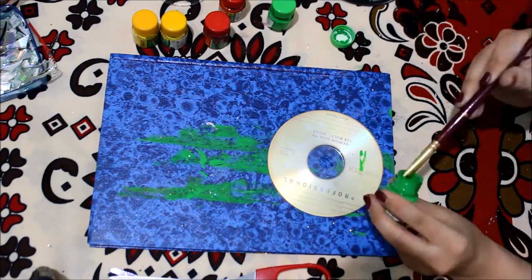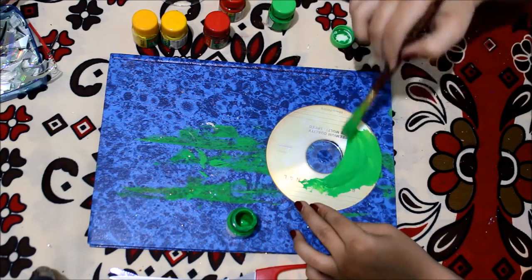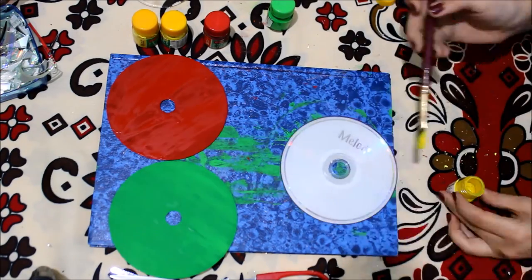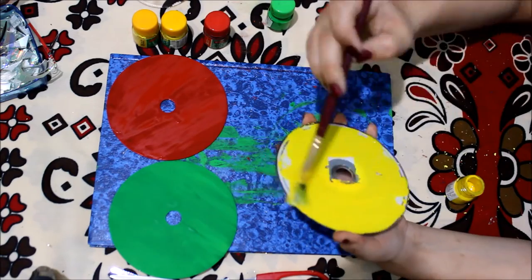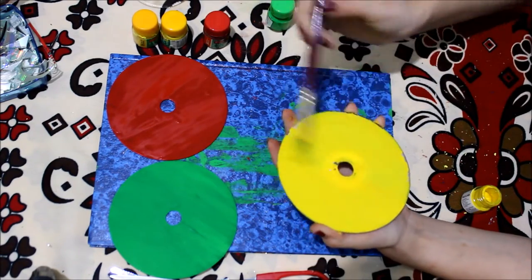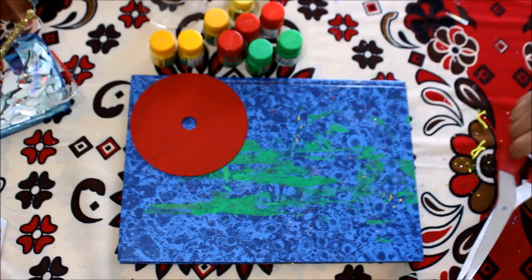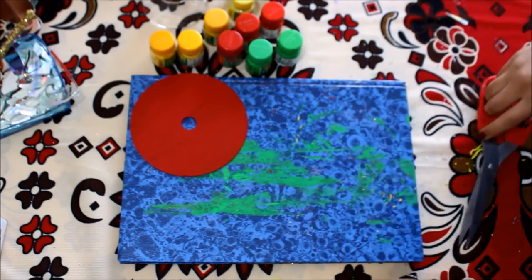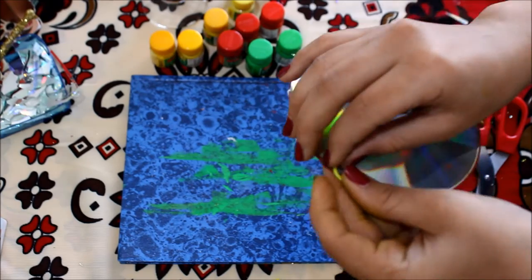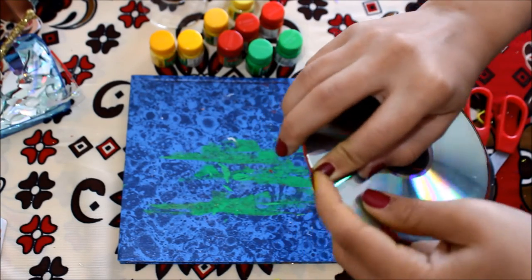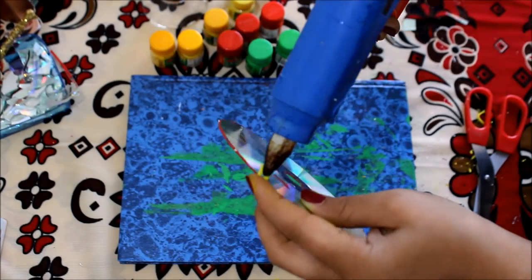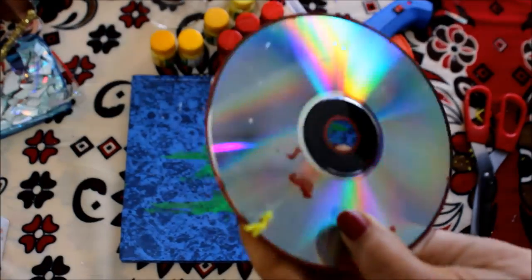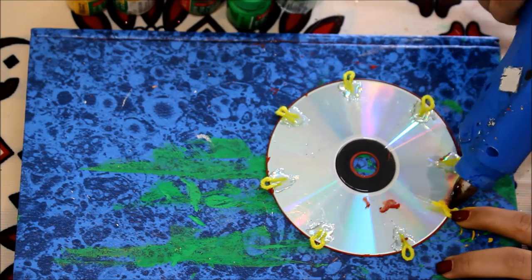This is our third DIY for today, and here you'll require three full CDs and three colors of your choice, and also a balloon thread. Now we are going to make a container which is specifically going to hold your earrings and necklaces. You'll have to cut a tiny piece of the wool and loop it around on the rear side of the CD and stick it with the help of the glue gun. Do this to all three CDs.